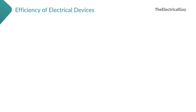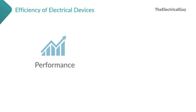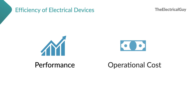Efficiency of electrical devices tells us about how well the device is performing. It also tells us about the operational cost that we will be spending on the device. And hence, efficiency is one of the important parameters of an electrical device.